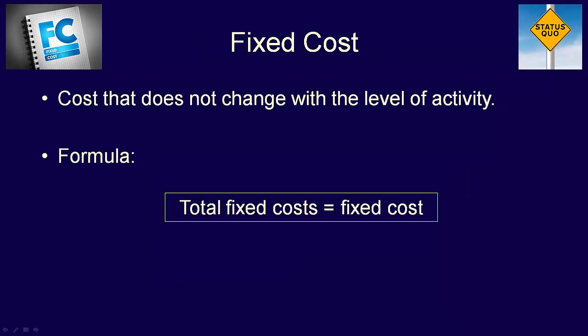We also have a formula for total fixed costs: total fixed costs equals fixed costs. That seems redundant to say, but it clearly shows that fixed costs don't change with the level of activity.